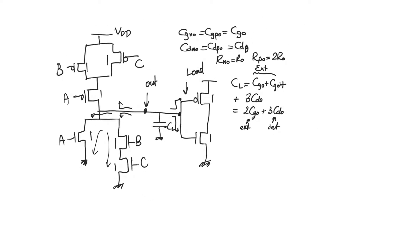When calculating delay, we ask for which input combination we are calculating it. For the input ABC = 1, 0, 0, branch A is active in the pull-down network, which means the output will be pulled down to 0 — so F will settle at 0. Therefore, we are calculating tp high-to-low, because the active branch is in the pull-down network and the path provided is a path to ground.